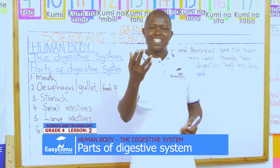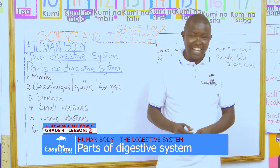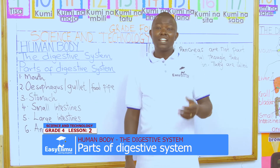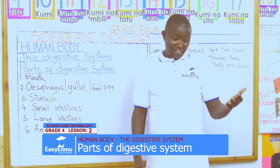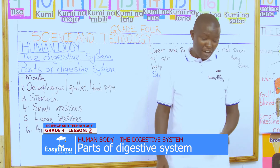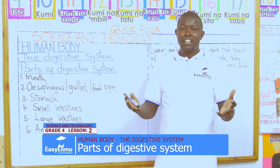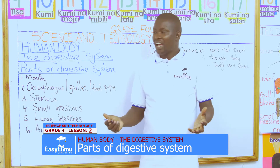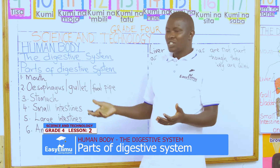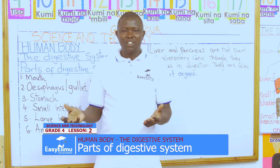Wangare — there is tongue, correct? And also we have saliva which is found in the mouth. And we defined what is digestion.